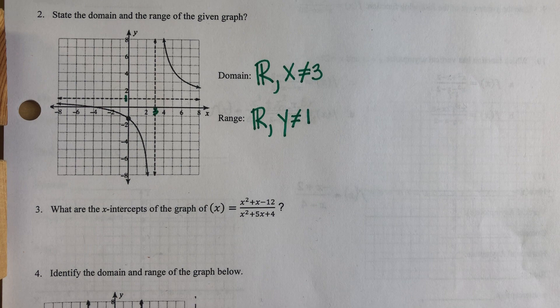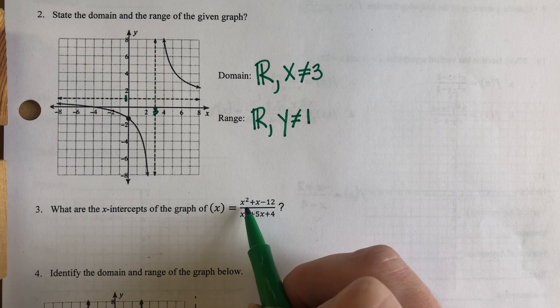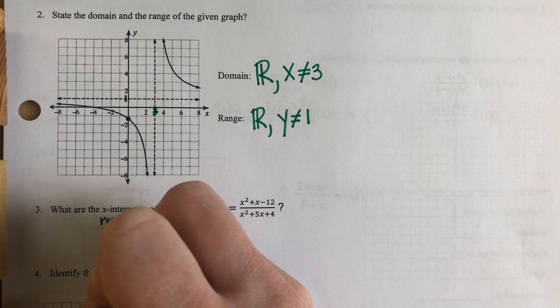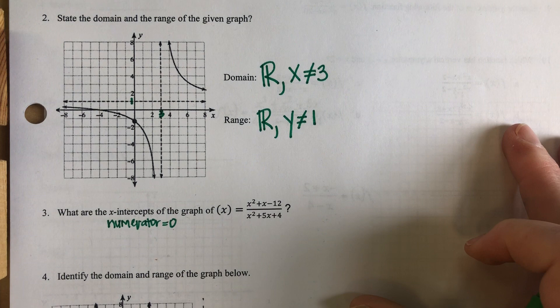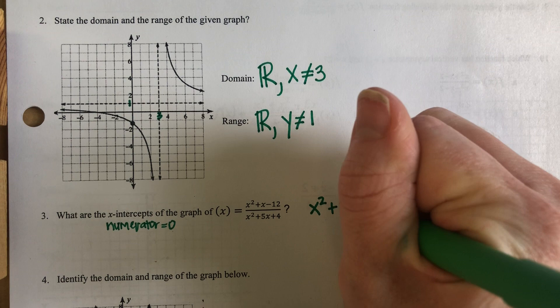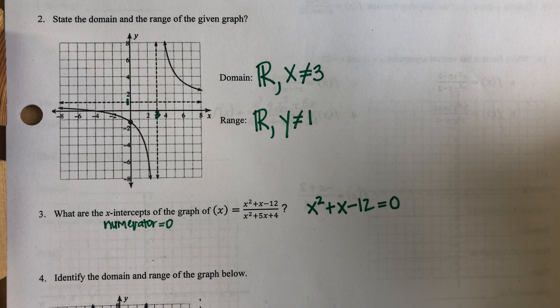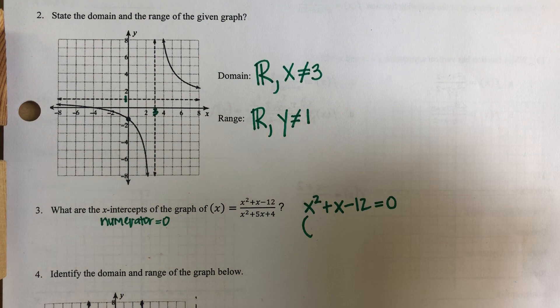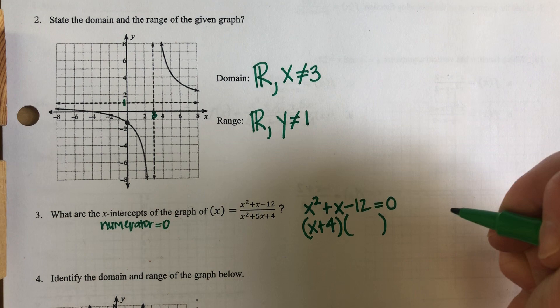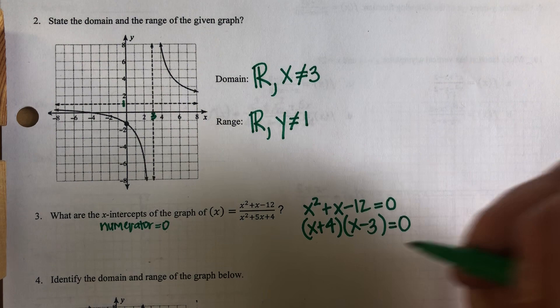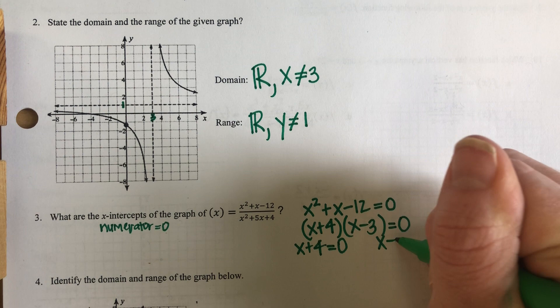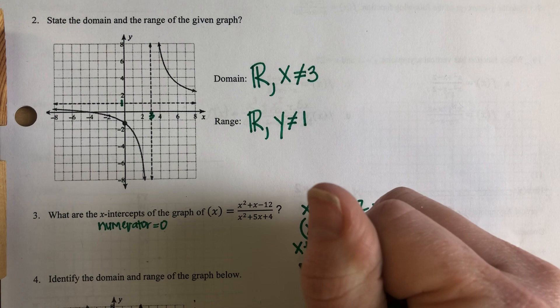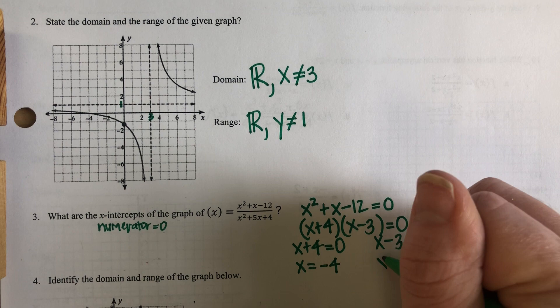Number three: what are the X intercepts of the graph? I need to remember that I am going to set my numerator equal to zero and I'm going to solve. So I'm going to bring my numerator over to the side and see if I can factor this equation. If I factor this, I should get X plus four and X minus three equals zero. This is where I would break each one apart and set it equal to zero. Solving for X, I get X equals negative four and X equals positive three.